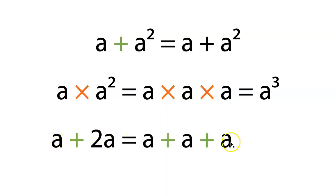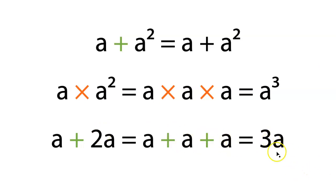So you could write this as a plus a plus a. You can simplify this because you've got three a's, and we know exactly how to write that: 3a. Not a to the 3 — that's multiplication — but 3a, because it is addition. So those are a wide variety of things you're going to see. Practice is going to make perfect here, so let's go do it.